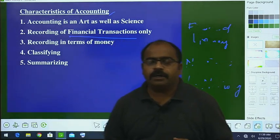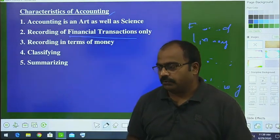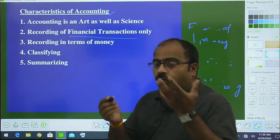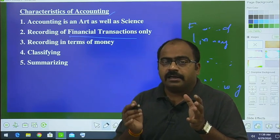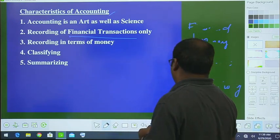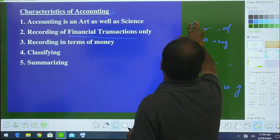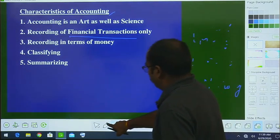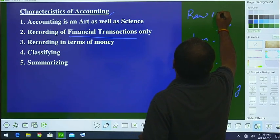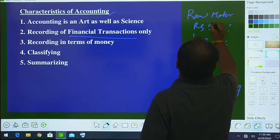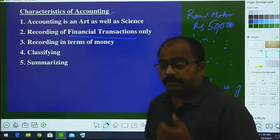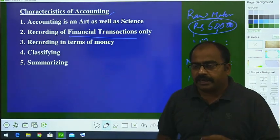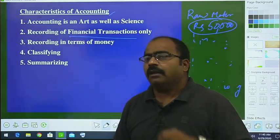Recording in terms of money: accounting says we must record transactions only in terms of money. For example, if we are purchasing raw material for rupees 50,000 — we do not record the weight in kg, we record only the amount, how much money is involved in purchasing that raw material. That has to be recorded in the accounting.